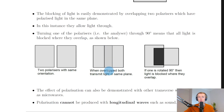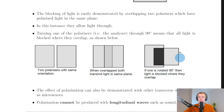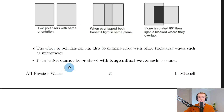Turning one of the polarizers — the analyzer — through 90 degrees means that all light is blocked where they overlap. On the right-hand side you can see when you've rotated your second polarizer around 90 degrees, where the two polarizers overlap you're going to get the light completely blocked.